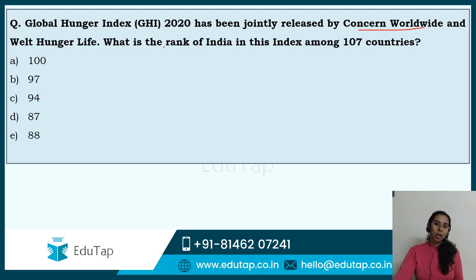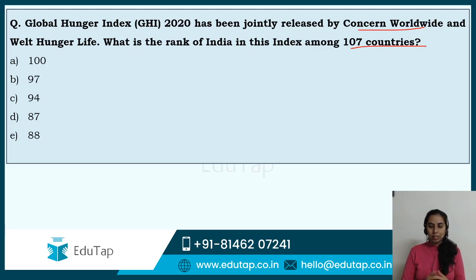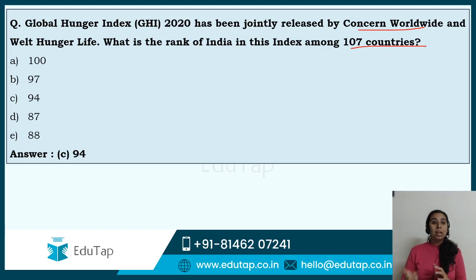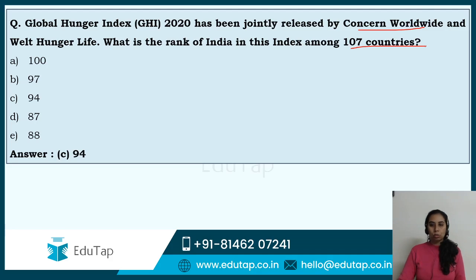What is the rank of India in this index among 107 countries? The rank of India in any international index is very important — I cannot emphasize it more — for phase 1 as well as phase 2. The rank of India in the Global Hunger Index 2020 is 94. Option C is the right answer among 107 countries. There can also be a question about which bodies released this index — those are Concern Worldwide and Welthungerhilfe.